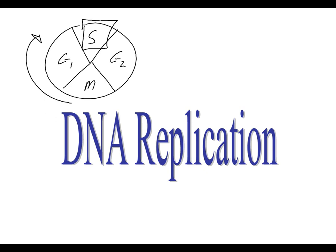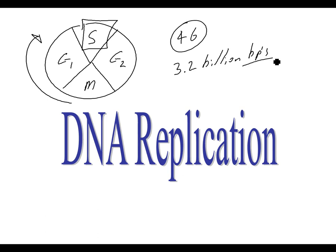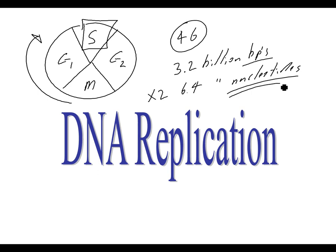Keep in mind this is a huge process when we're talking about human chromosomes. There are 46 chromosomes, and split up amongst those 46 chromosomes we have the building blocks of DNA — the nucleotides, the base pairs. On the human 46 chromosomes, there are 3.2 billion base pairs. That means we need to multiply this number by two, so 6.4 billion nucleotides need to be available to the cell inside S of the cell cycle in order to replicate the DNA.